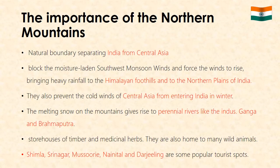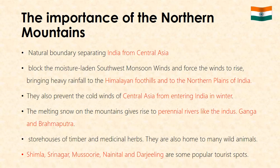The importance of the northern mountains: The northern mountains form a natural boundary separating India from central Asia. They affect the climate of India in two ways — they block the moisture-laden southwest monsoon winds and force the winds to rise, bringing heavy rainfall to the Himalayan foothills and the northern plains of India. They also prevent the cold winds of central Asia from entering India in winter. The melting snow gives rise to perennial rivers like the Indus, Ganga and Brahmaputra. The forested slopes are storehouses of timber and medicinal herbs and are home to many wild animals.